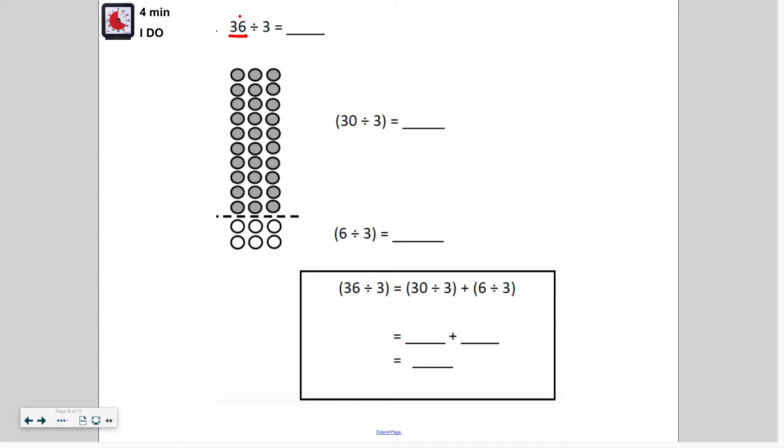So this is the dividend, 36, and the divisor is the number dividing by. That's 3 and then our answer would be the quotient. So dividend, divisor, quotient.